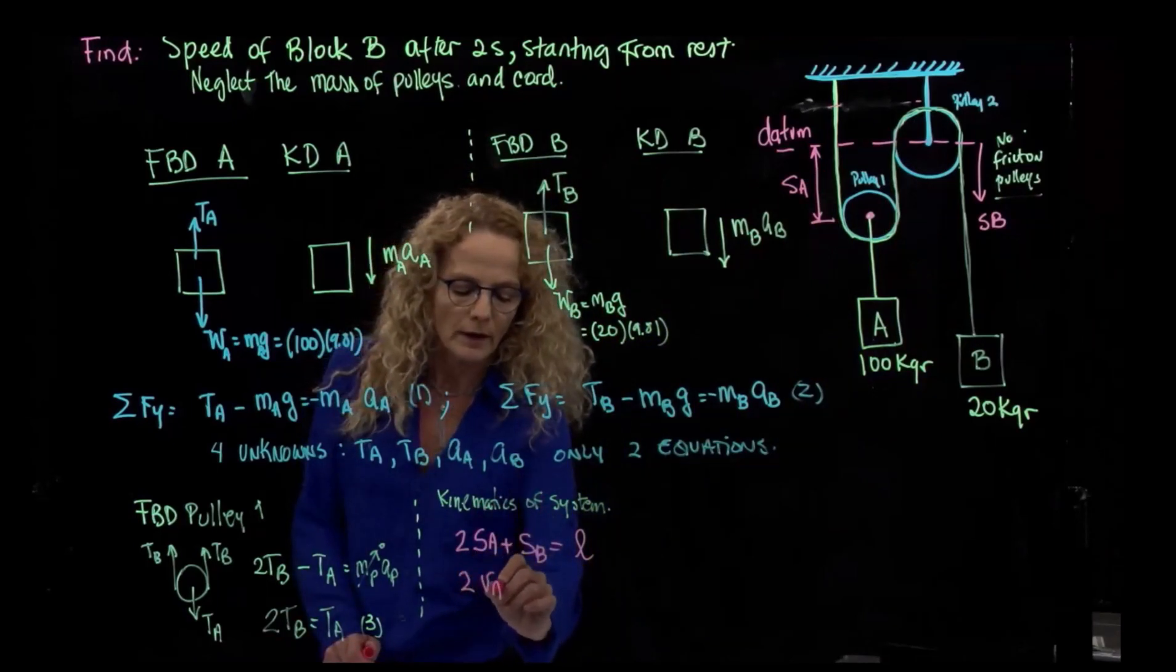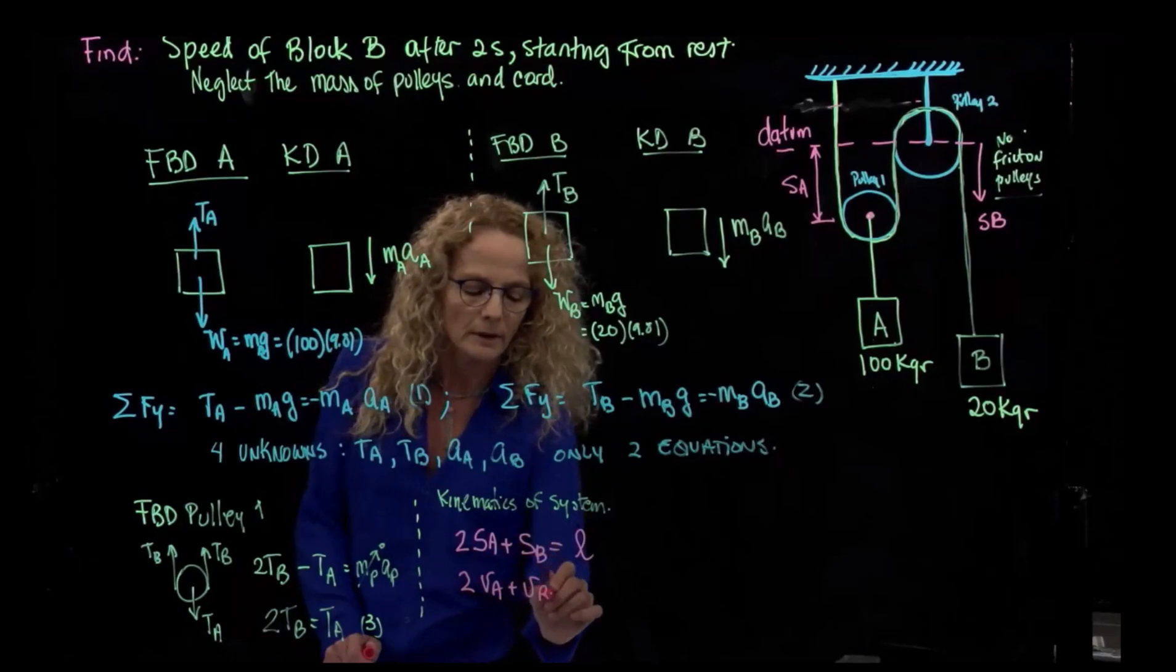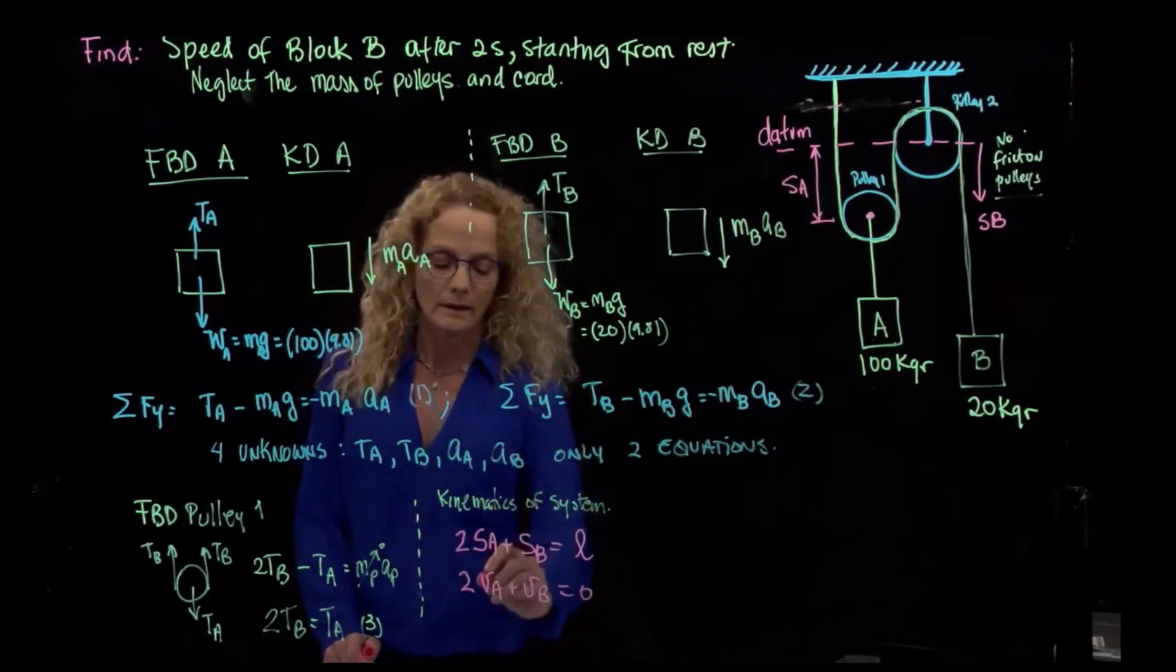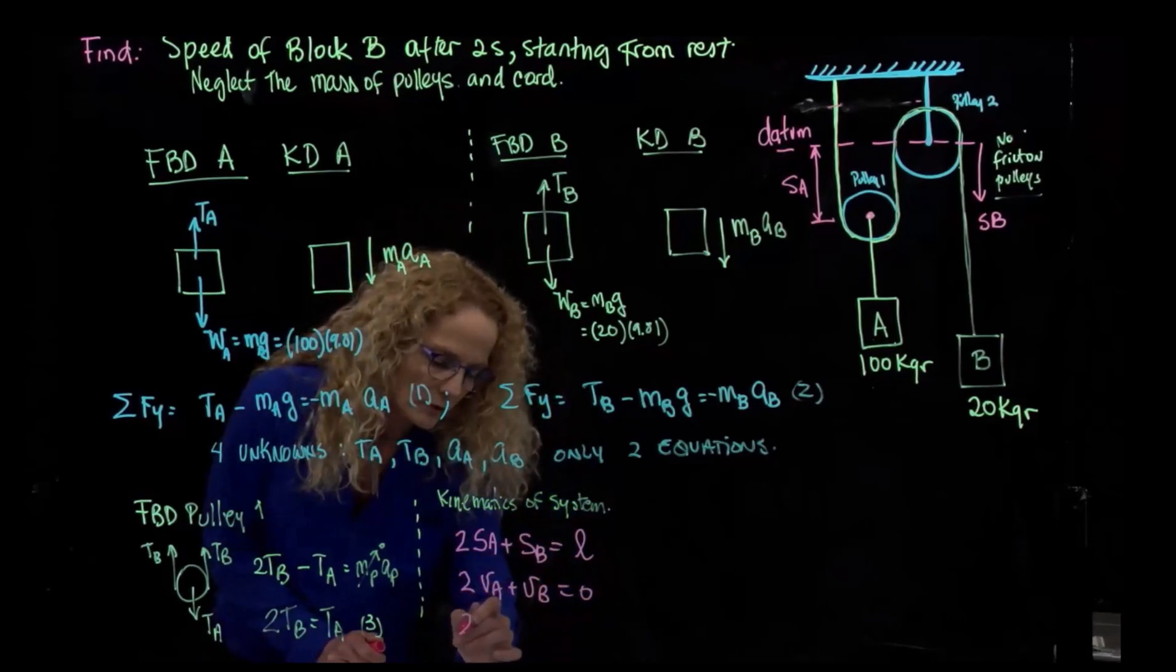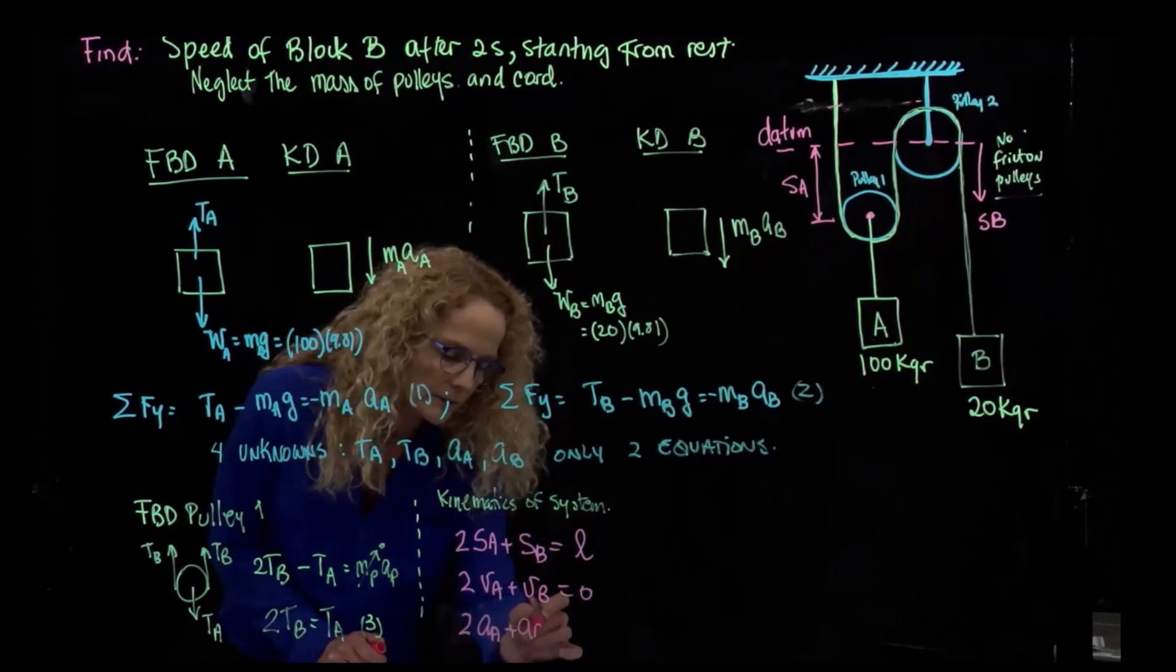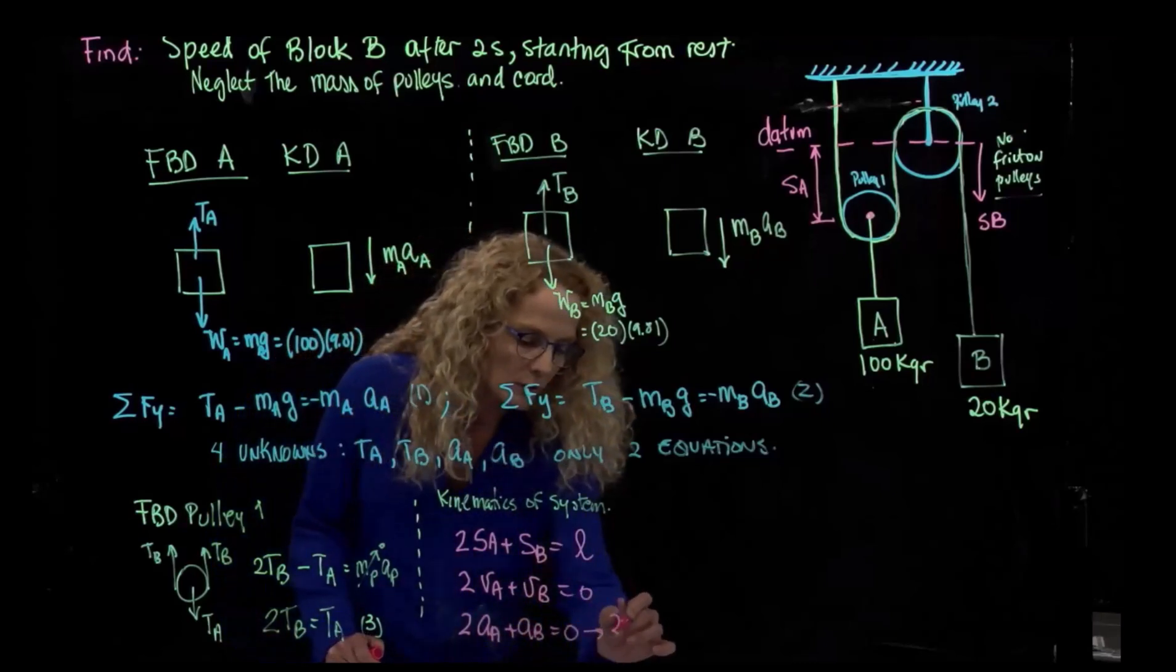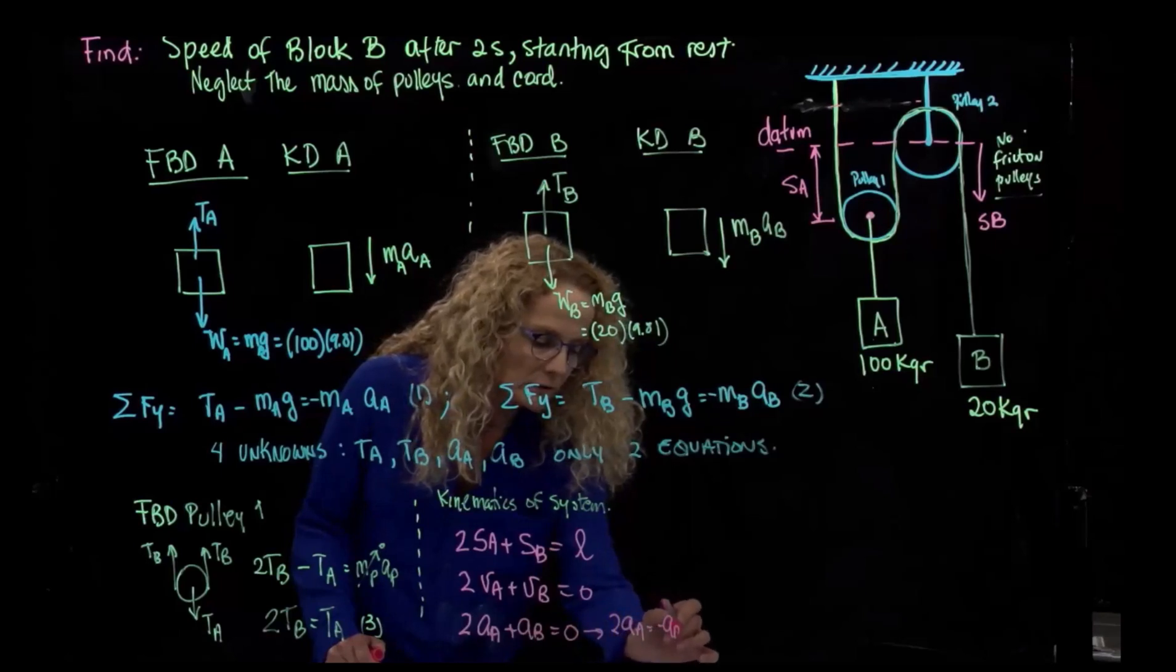And we can derive again, and we get the 2 acceleration of A plus acceleration of B is equals to zero. So from here, we can say that 2 acceleration of A is negative acceleration of B.